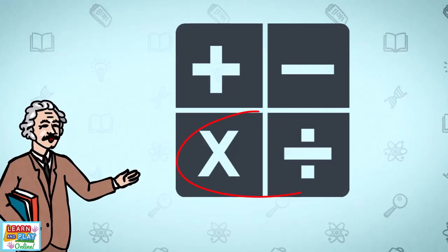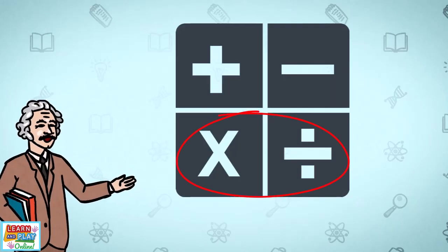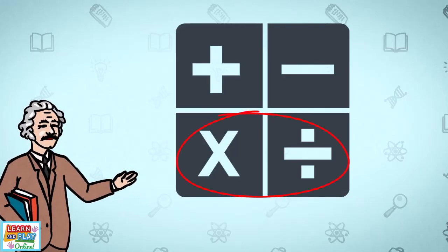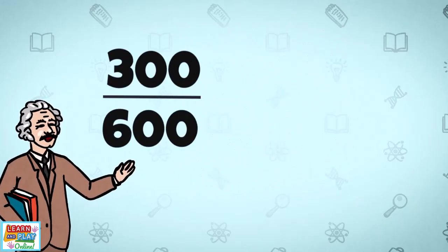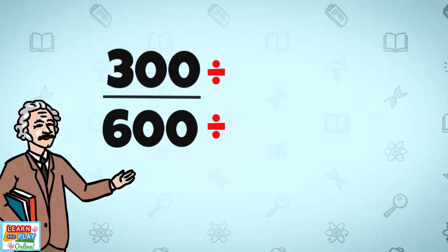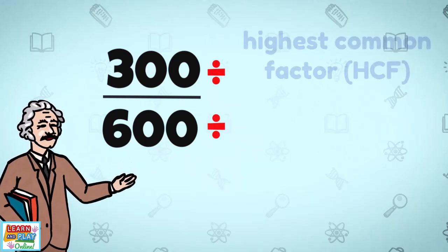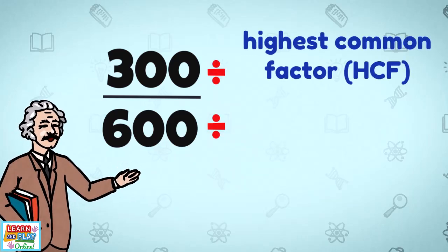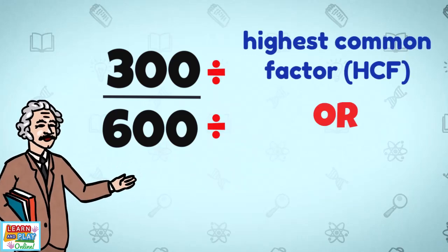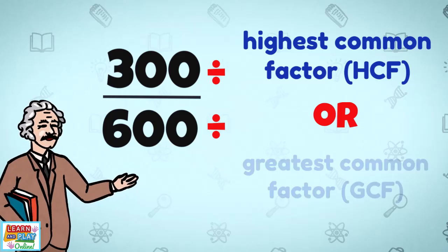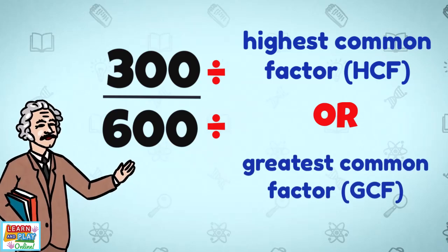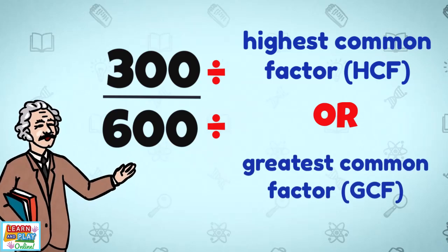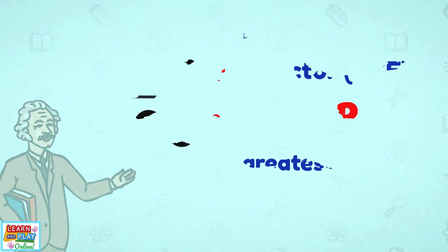In order to simplify fractions, it would definitely help to know your multiplication and division facts. This is because we need to divide both the numerator and the denominator by what we call the highest common factor, or otherwise also known as the greatest common factor. Let's explore some examples so you have a better understanding of this.